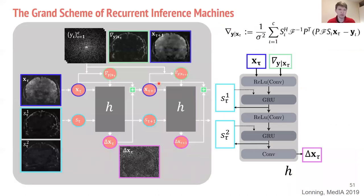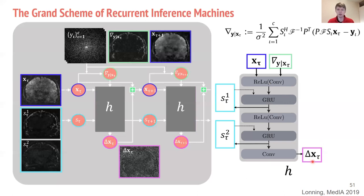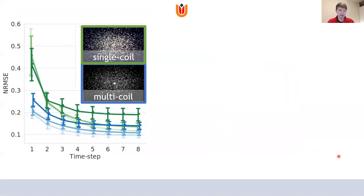The network takes an iterative approach with parameters shared over iterations. Per iteration, the current estimate of the image is given along with the log likelihood gradients — this is where the forward model with the MR physics is embedded in the network. Passing through the network yields an update delta-x which is added to the current image estimate. This recurrent approach is beneficial because the error reduces over iterations until convergence; we chose eight time steps before terminating the reconstruction.